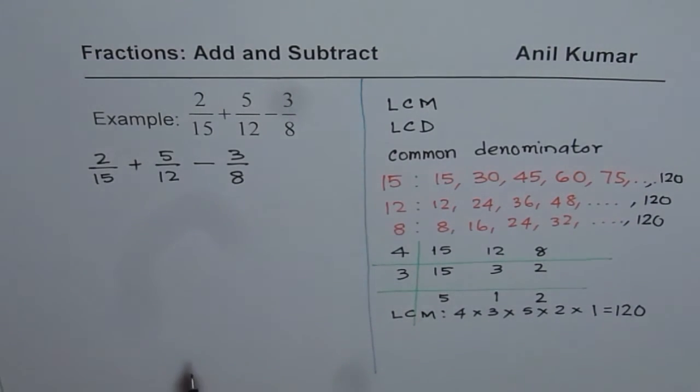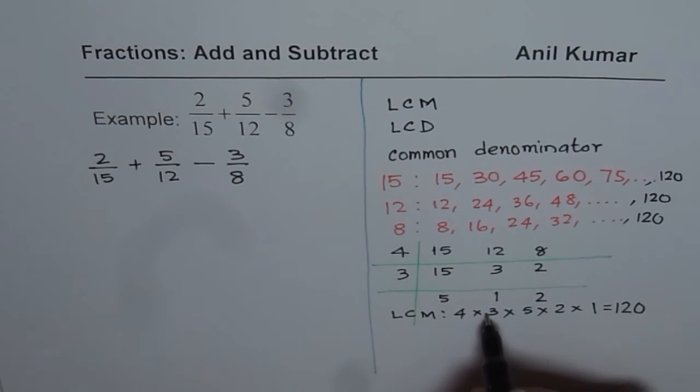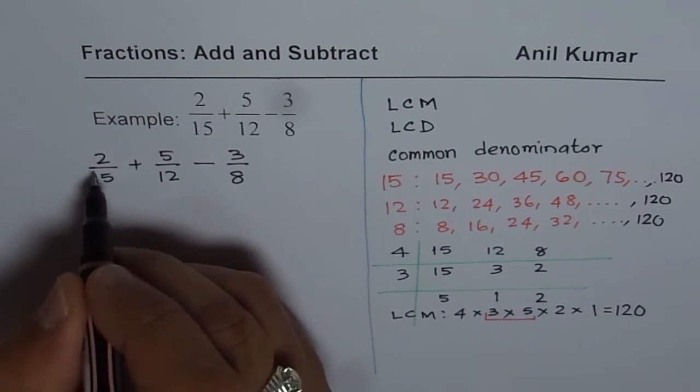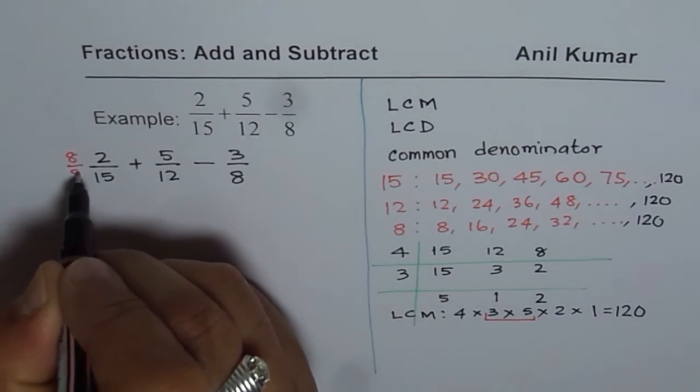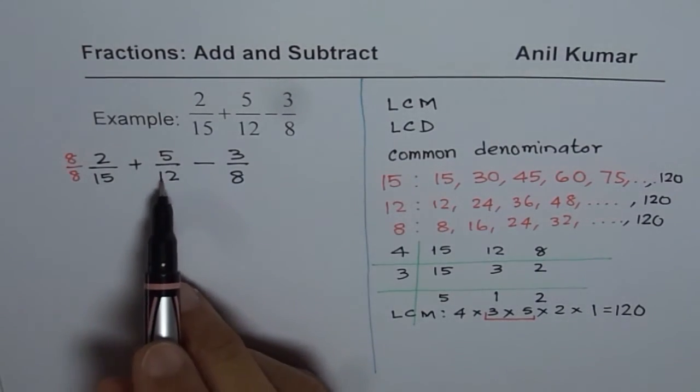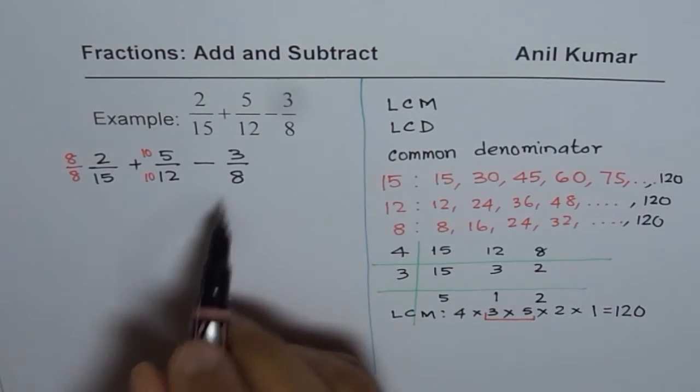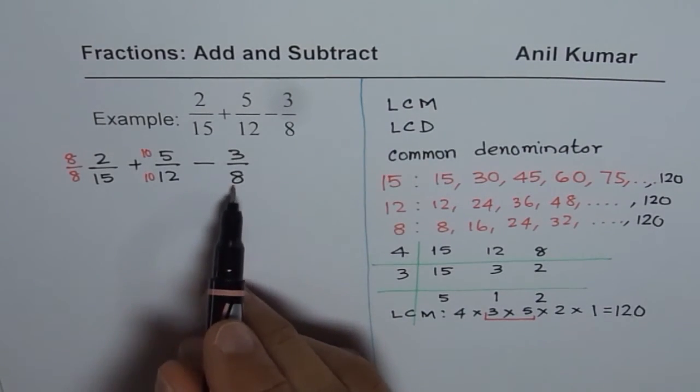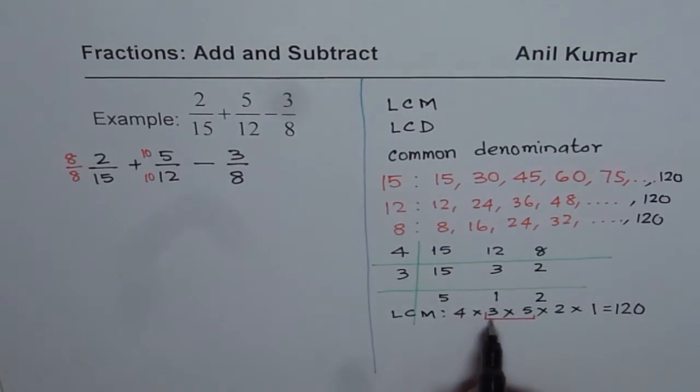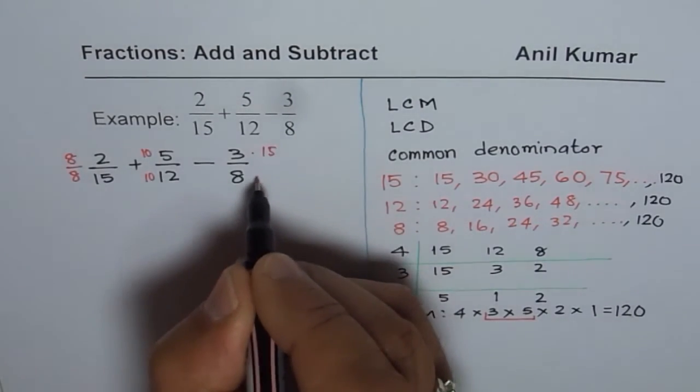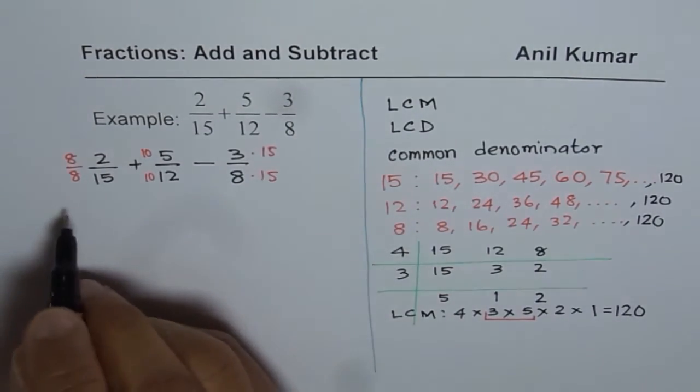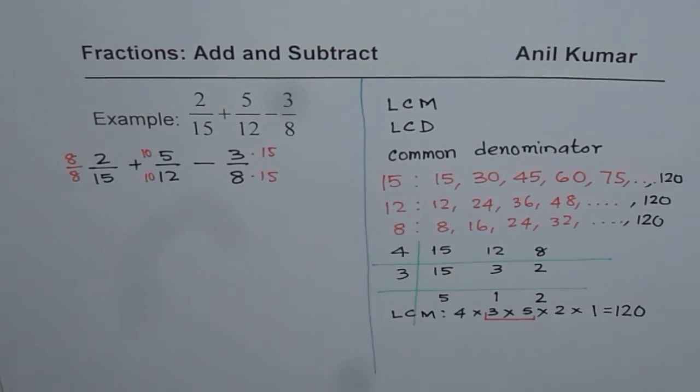How do you make this 120? You can see from here 5 times 3 is 15. So you have to multiply by 8. We have to multiply the first term by 8. So multiply and divide by 8. The next term is 12. To make it 120 you need to multiply and divide by 10. The last term here is 3 over 8. So 4 times 2 is 8. You have to multiply by 15. To make common denominator as 120.